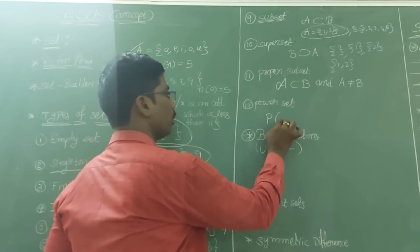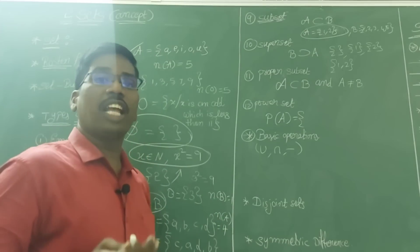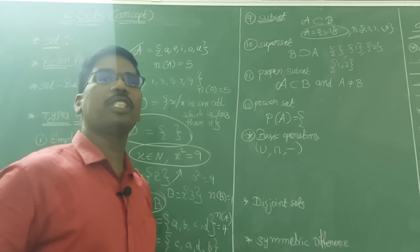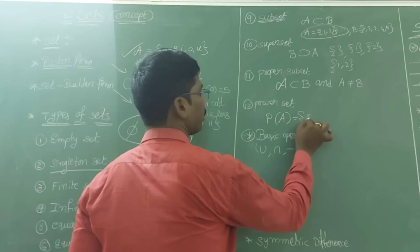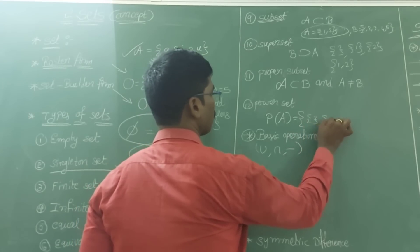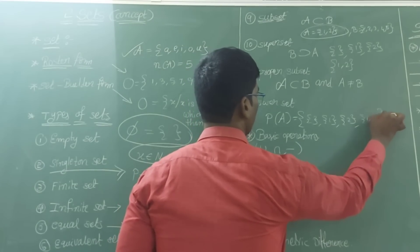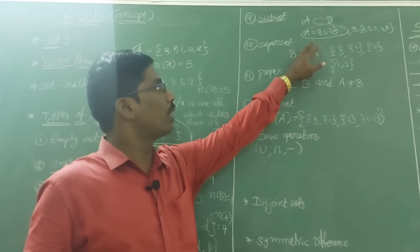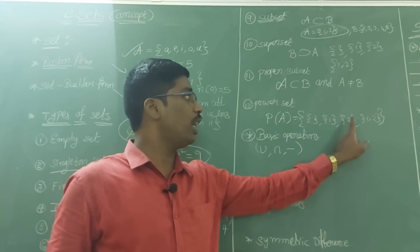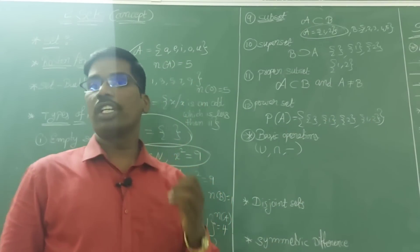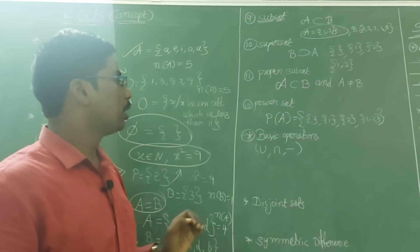Power set: a set which contains all the subsets of a given set A is called the power set, denoted P(A). For example, if A = {1, 2}, then P(A) = {φ, {1}, {2}, {1,2}} — four subsets. The power set has 2ⁿ elements where n is the number of elements in A.